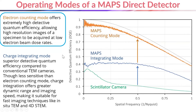Electron counting is a mode in which the MAPS detector is able to identify and count each electron incident on the sensor, so long as you operate the detector under suitable low-dose conditions. This counting mode can achieve quantum efficiencies approaching the theoretical maximum, which are enormously higher than those of scintillator coupled cameras, making electron counting MAPS detectors very useful for imaging specimens with minimal beam damage.